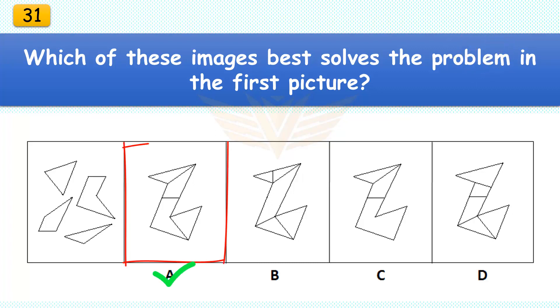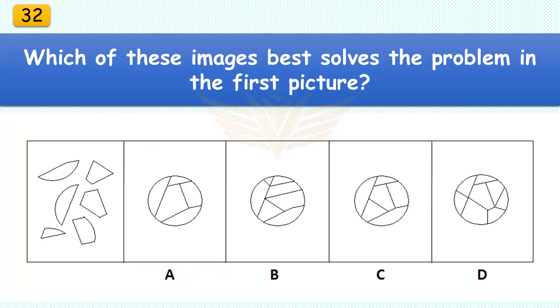Which of these images best solves the problem in the first picture? The correct answer is A. There are four pieces in the assembled puzzle.